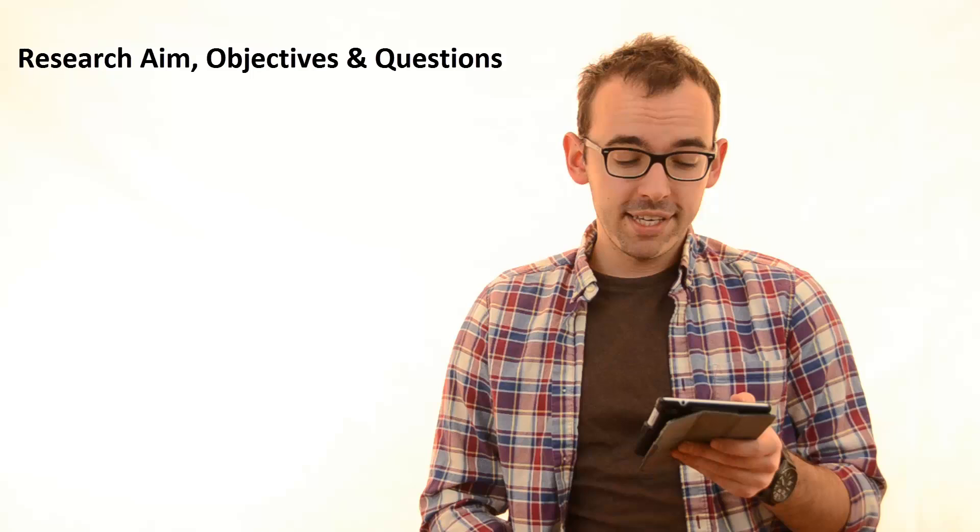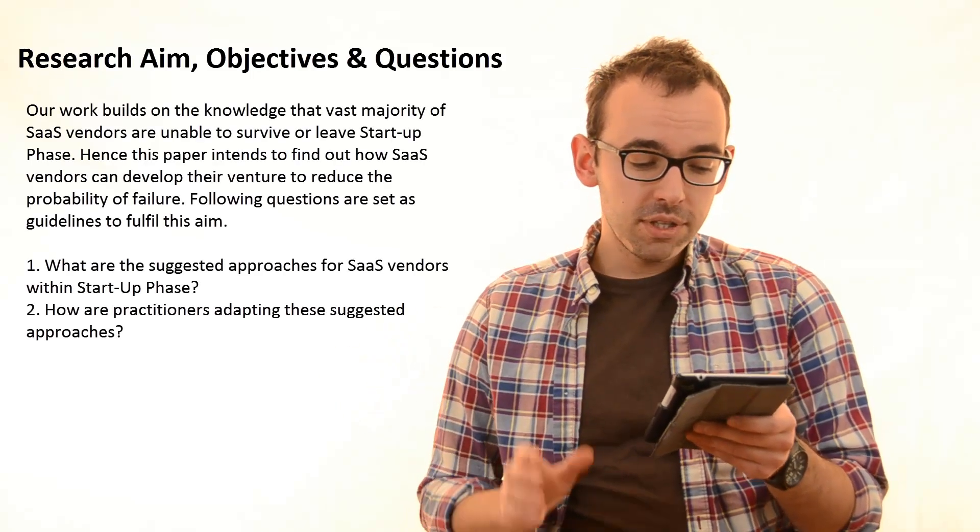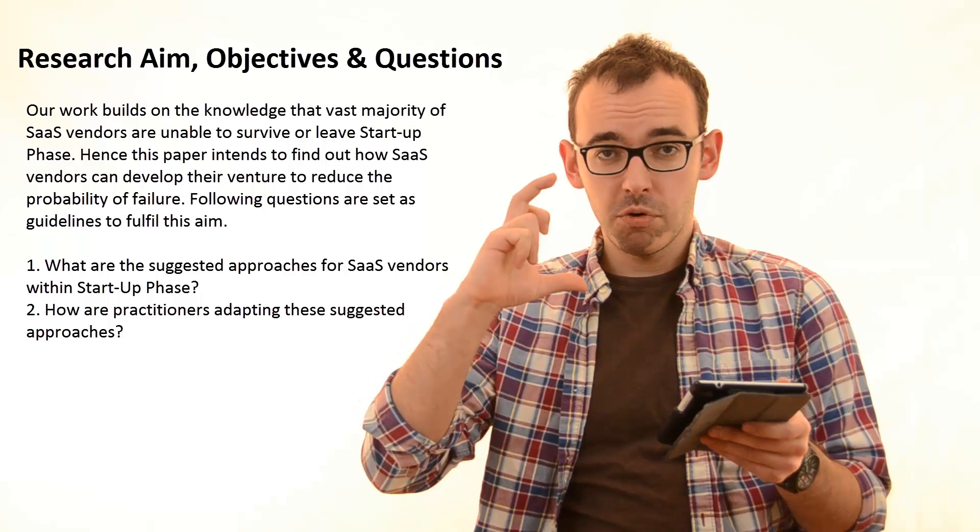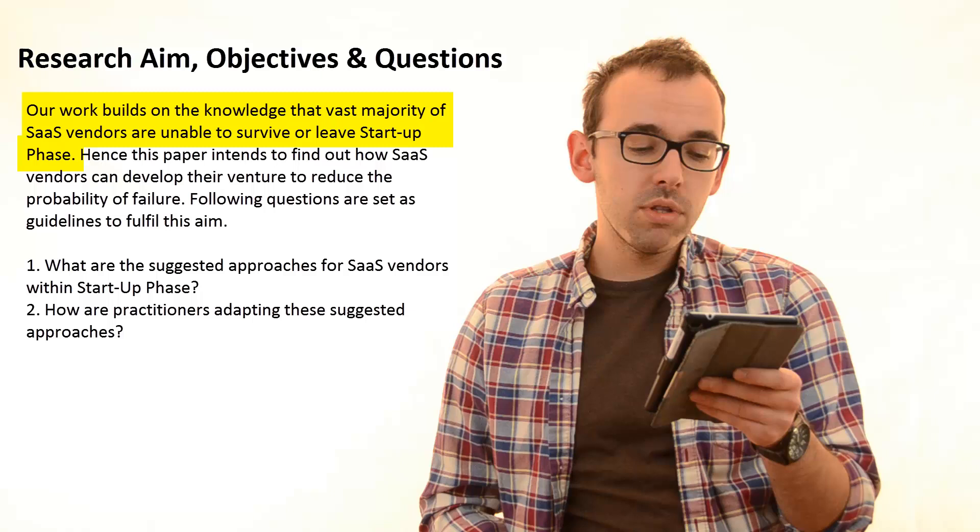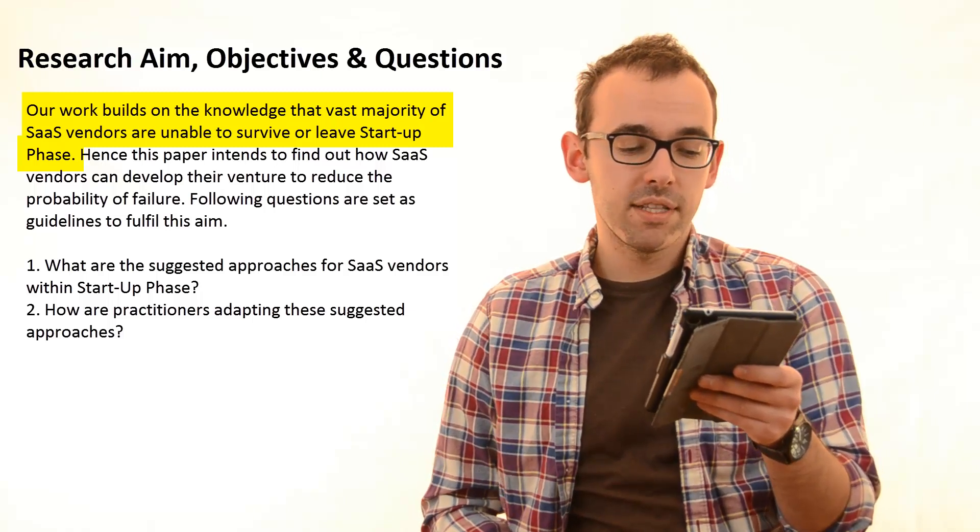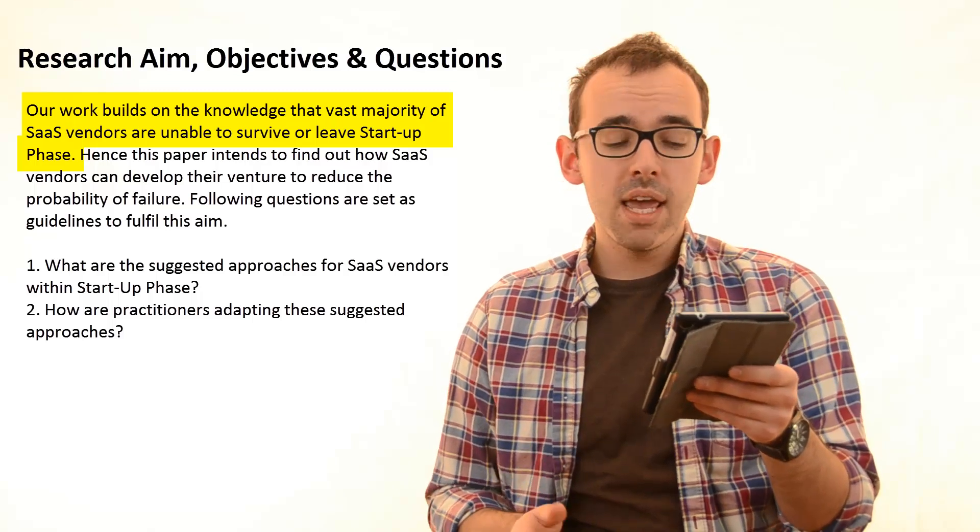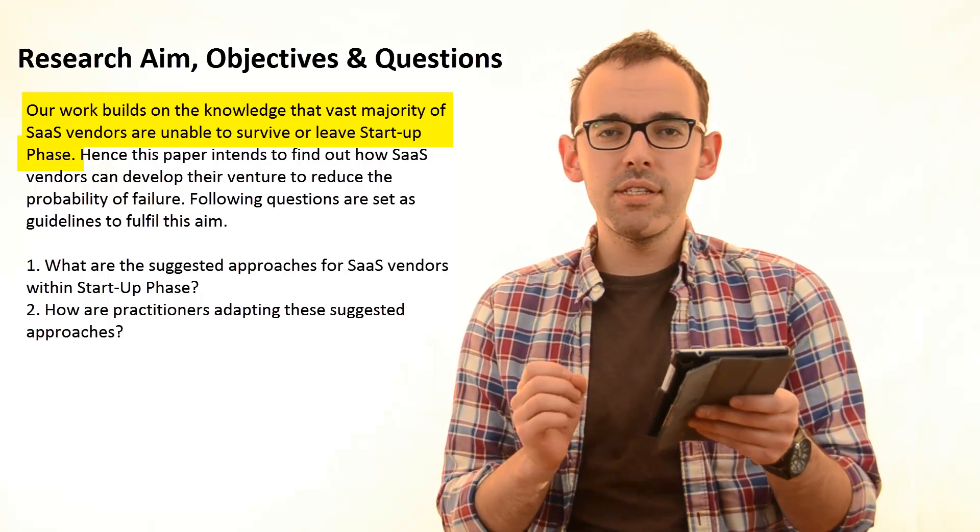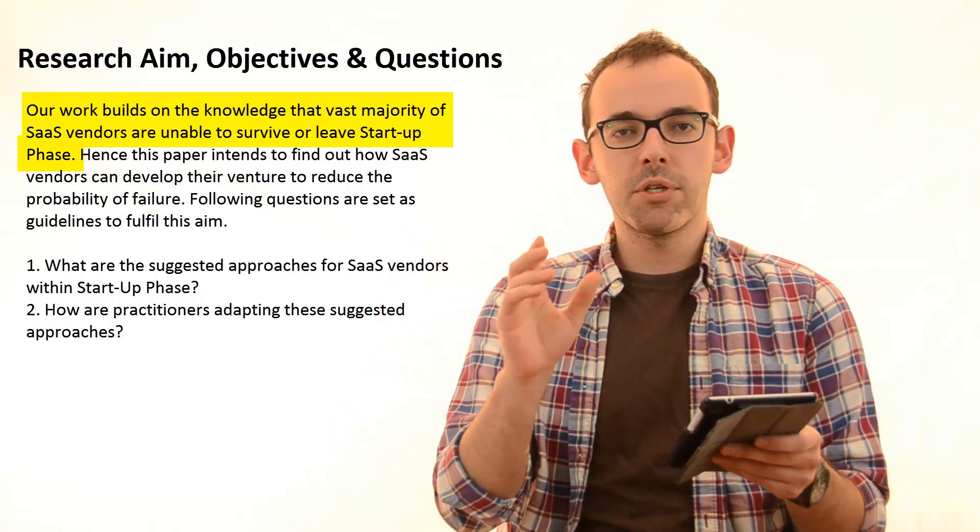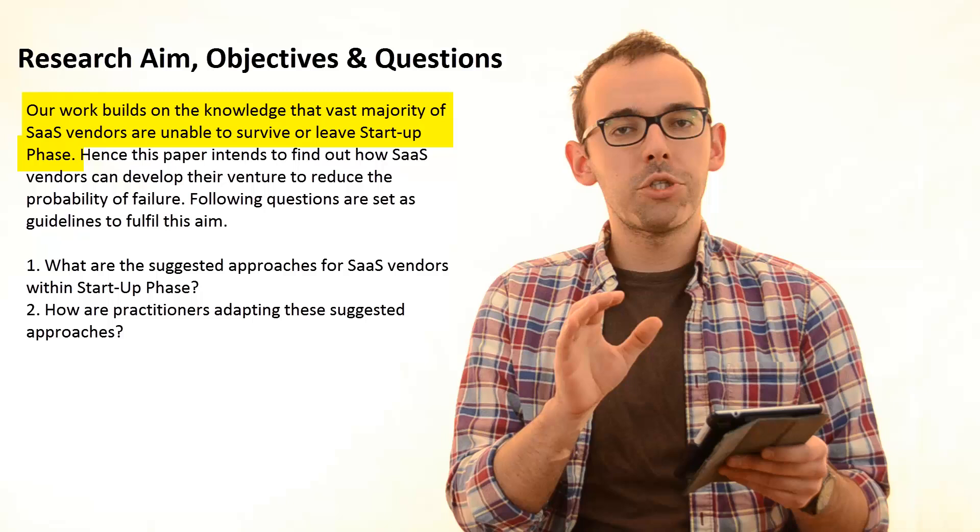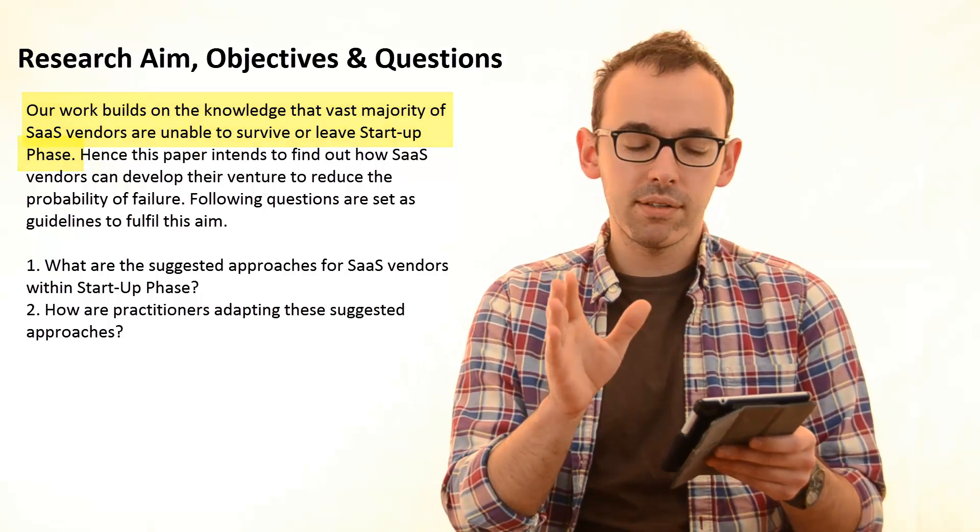Let's look at some concrete example, and this is from my old research. So the research aim, this whole part, was stated as follows: Our work builds on the knowledge that vast majority of SaaS vendors are unable to survive or leave startup phase. You see, this first sentence in the research aim is basically referring back to the problem description, back to the introduction where we justified our research.